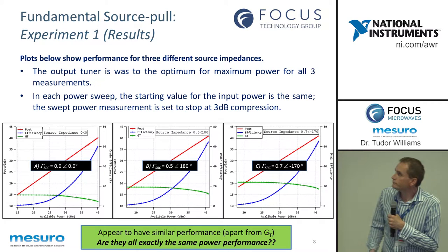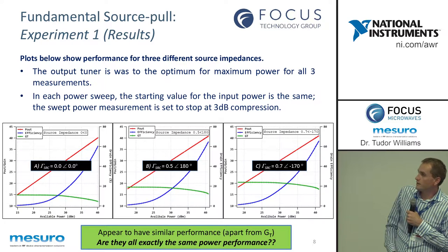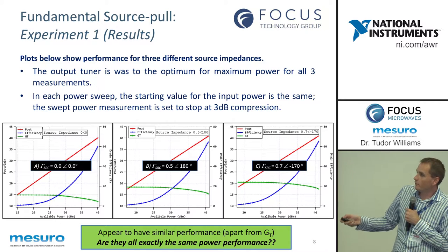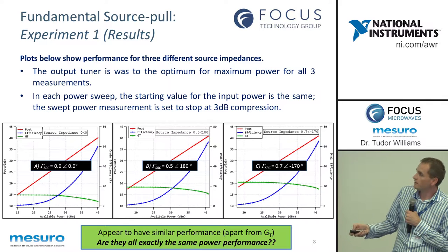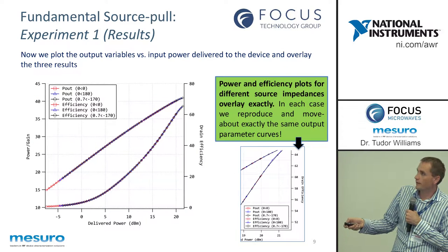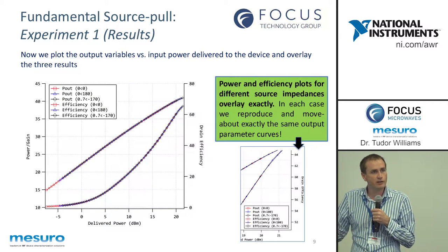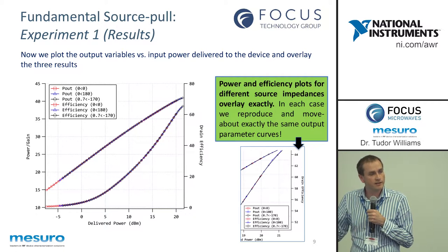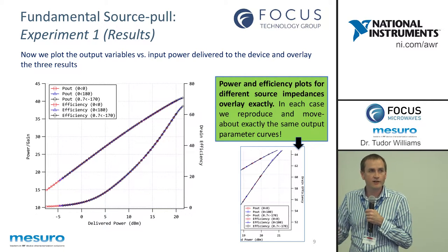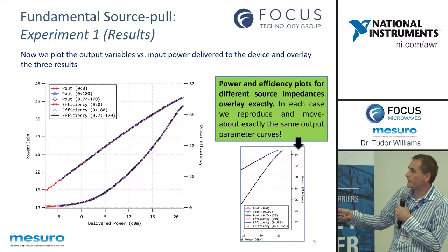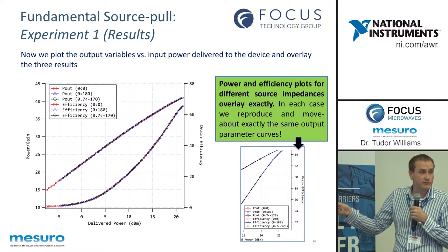So you end up with three different plots, three different source impedances. Obviously, the transistor gain changes — if you change from one impedance to the next, you get more or less transistor gain. But really, we don't know what happens. Looking at available power in is not the way to do it. So if we change it now to look at delivered power and then overlay the plots, we can actually see they all line up. All you're doing is moving along the same power transfer curve as you change source impedance — all you're doing really is controlling the power going into your device. You're not actually changing anything. You're still moving up and down the same set of power and efficiency curves as you do that.